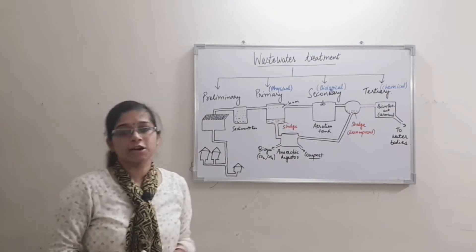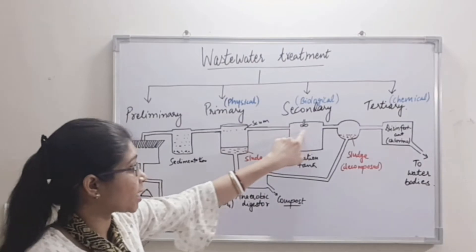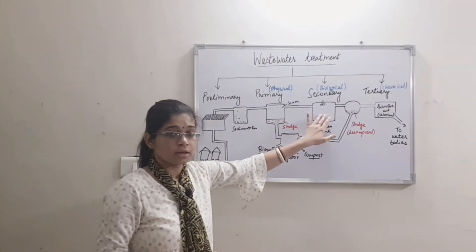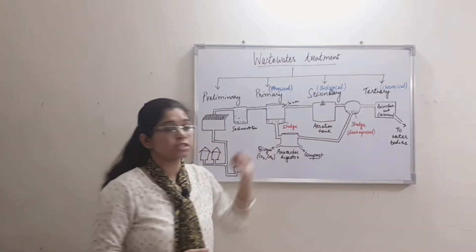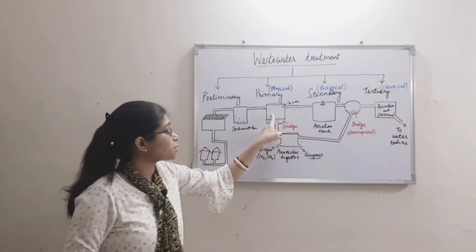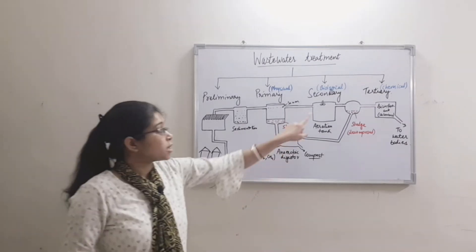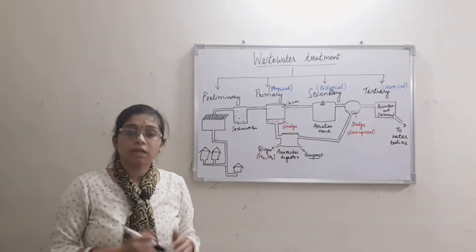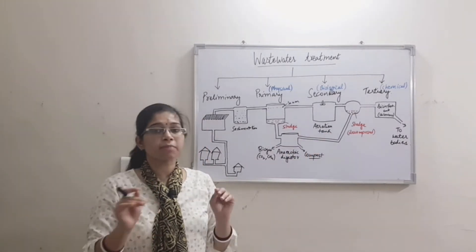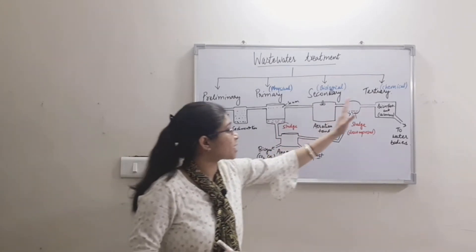The clarified water goes to secondary treatment, which is biological treatment. A fan continuously blows air in the aeration tank. Aerobic bacteria in the aeration tank consume the dissolved organic matter and inorganic matter.